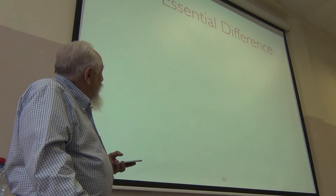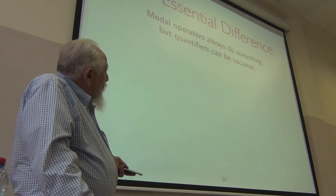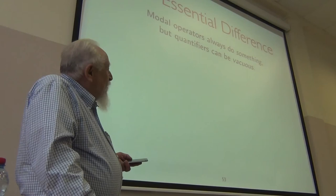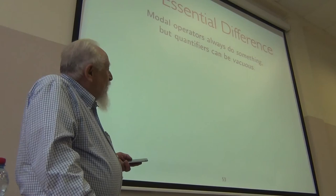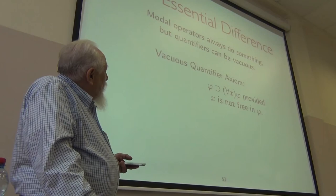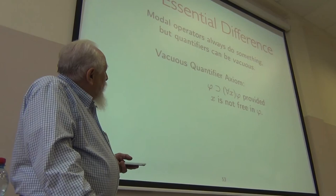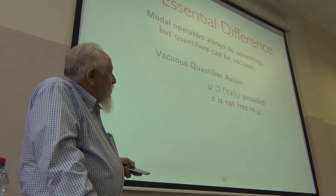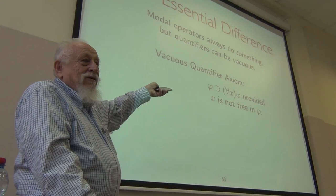Semantically, this is the essential difference between the modal case and the quantifier case. Modal operators always do something — if you put a box on a formula, it has an effect. Quantifiers don't always do something: there are vacuous quantifiers that don't do anything. That's exactly what you need. Vacuous quantification: phi implies for-all x phi, provided x is not free in phi. For-all x phi will be, for all intents and purposes, the same as phi. This is the axiom you need to add.